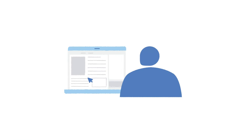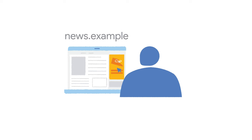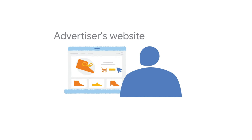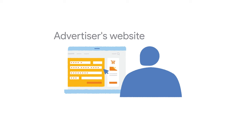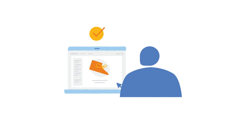Imagine a person visits a publisher site, say news.example. The site has ads on it managed by an ad tech company, say adtech.example. adtech.example has added attribution reporting code to the ads on the page, so that the browser records views and clicks along with some contextual data, such as the ID of the ad creative. The person sees an ad for shoes and clicks on it, which takes them to the advertiser's site, say shoes.example, and eventually they buy the shoes. In other words, the person has converted from being a website visitor on news.example to being a buyer on shoes.example. After the conversion, the browser sends conversion reports to the ad tech company, and maybe the advertiser and the publisher as well.